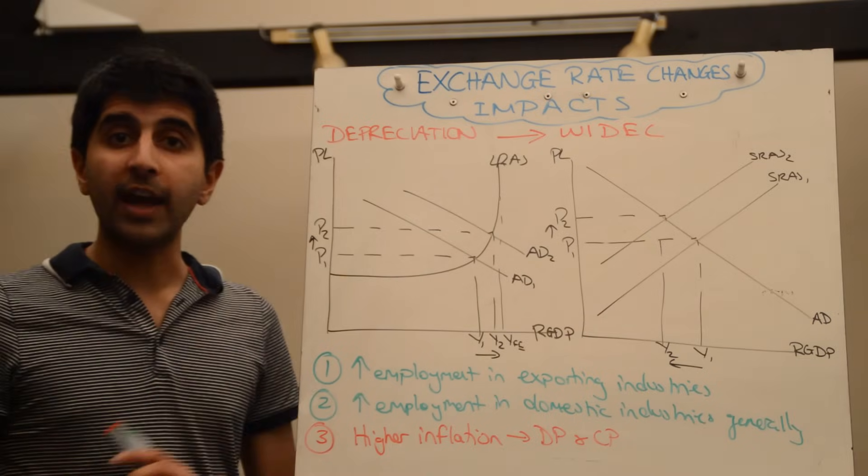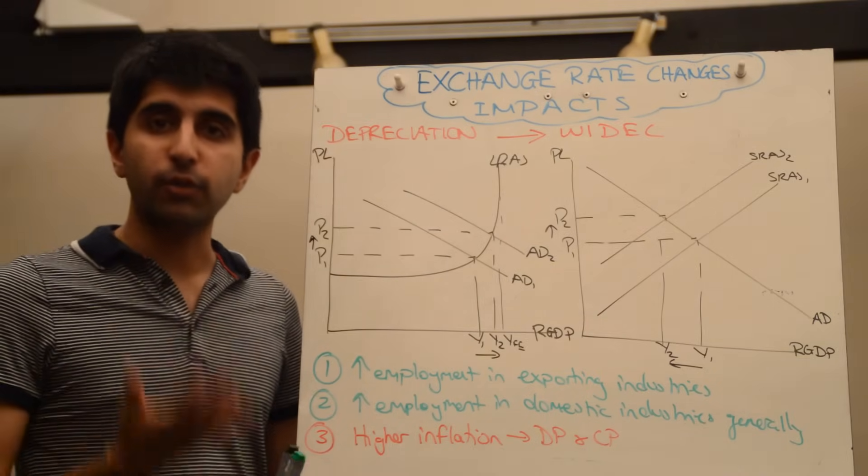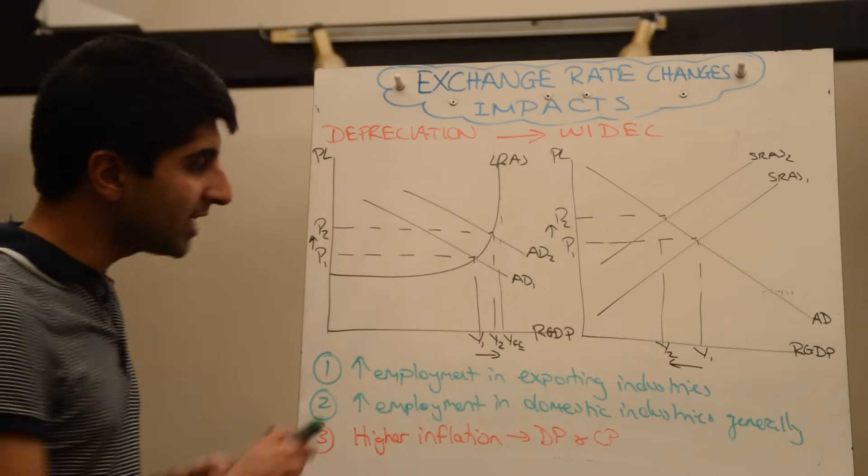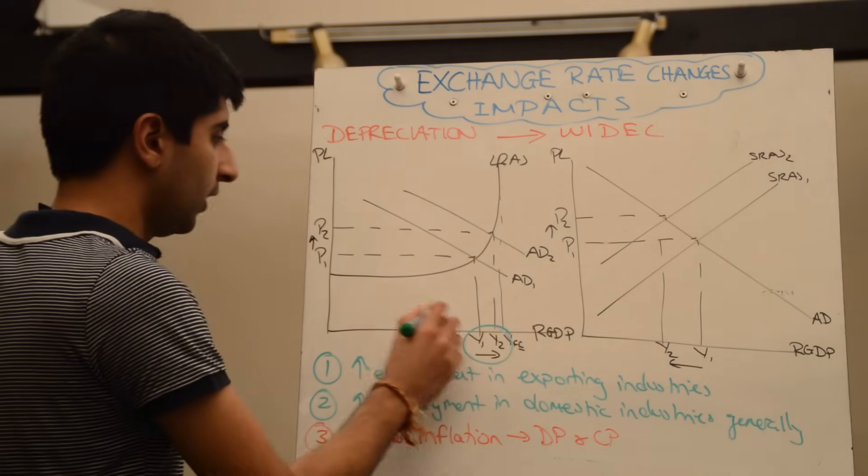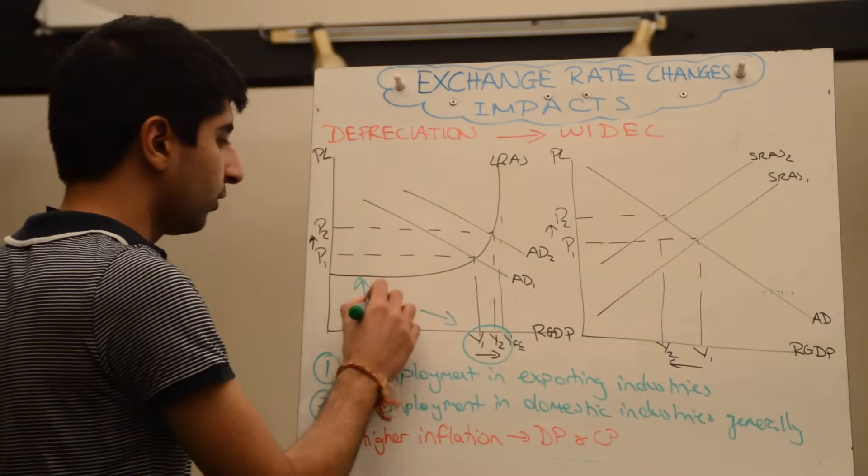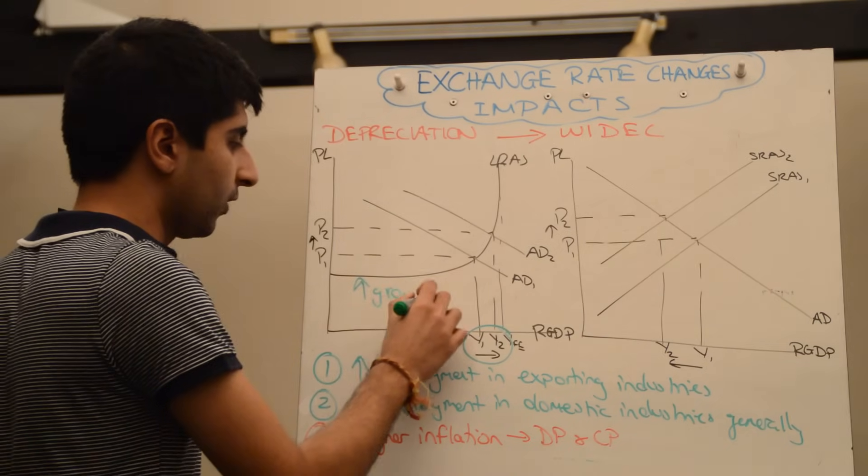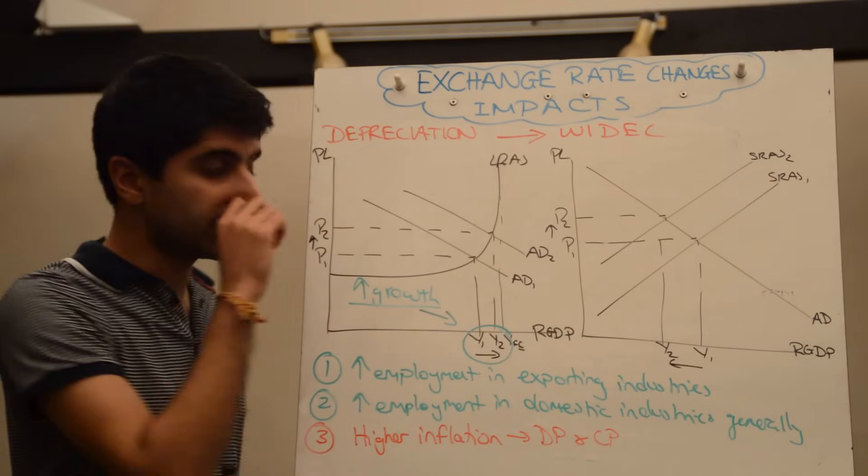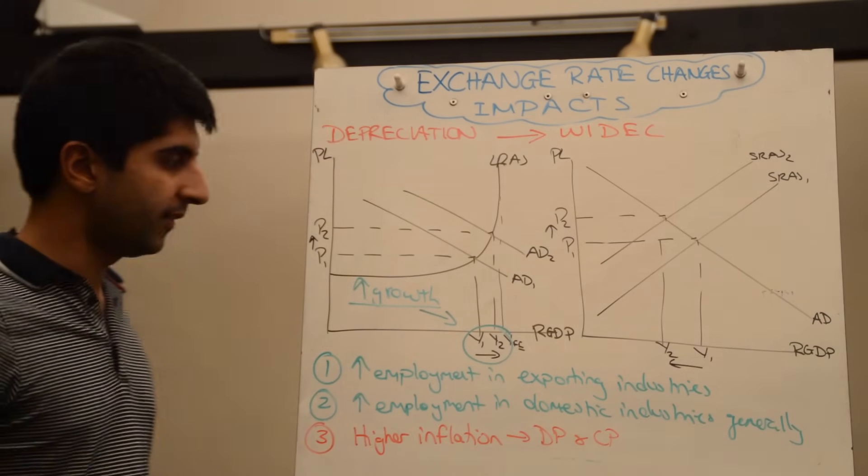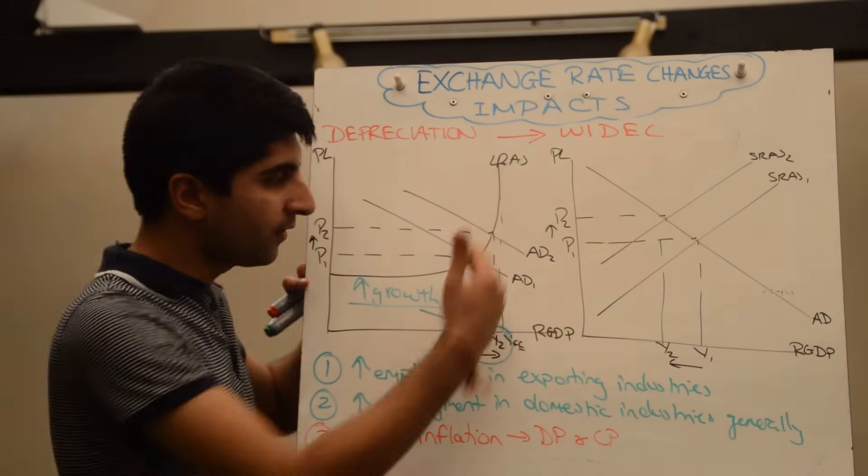Revenue generated from exports in theory should go up. That should increase X minus M which increases aggregate demand, shifts it right and we see a major benefit here of increased growth. So an increase in growth in the economy is a huge benefit as a result of a depreciation in the exchange rate. So AD shifts to the right.